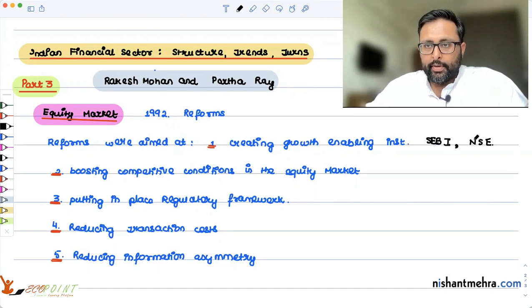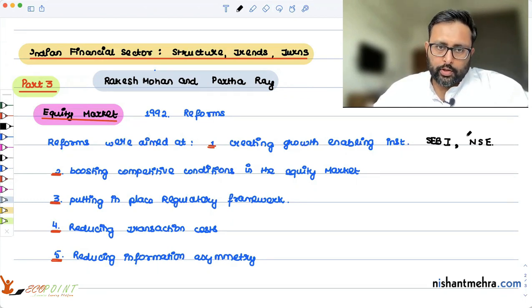Another growth enabling institution was National Stock Exchange. It was established in 1992. This was the modern electronic trading platform, and this helped in the introduction of derivatives trading in India. Derivatives such as futures, options, etc. were also started trading on National Stock Exchange for the first time in India.